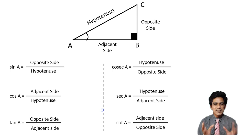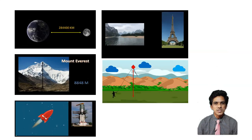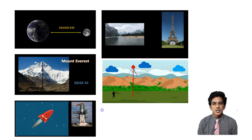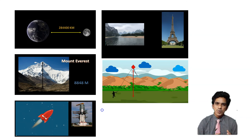We have solved some problems involving these ratios in the previous chapter. Now this chapter specifically describes how we can really apply this knowledge of trigonometry in our real life situations — such as calculating astronomical distances like the distance between stars and planets, the height of Mount Everest, navigation of aeroplanes or rockets, finding the width of a river, or the heights of tall structures like the Eiffel Tower.